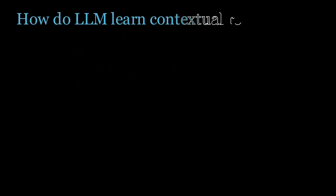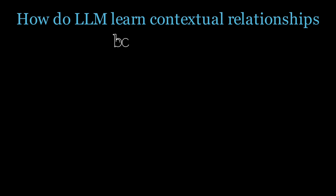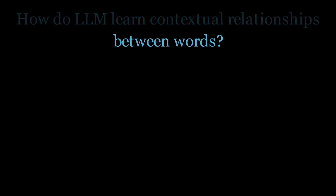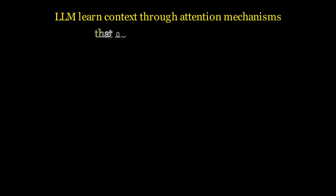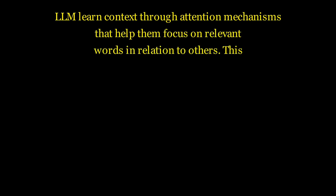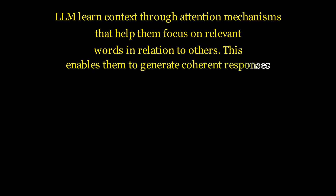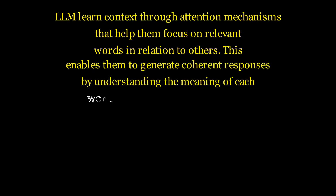How do LLMs learn contextual relationships between words? LLMs learn context through attention mechanisms that help them focus on relevant words in relation to others. This enables them to generate coherent responses by understanding the meaning of each word in the context of surrounding text.